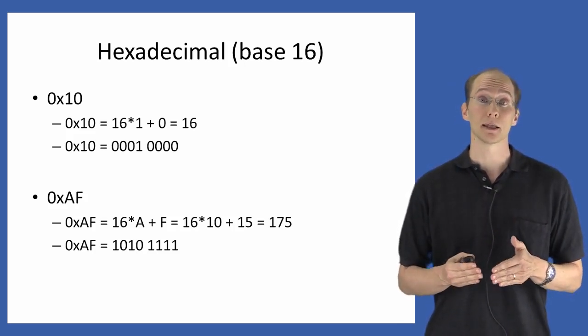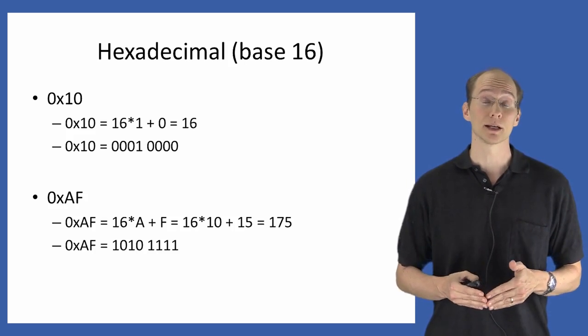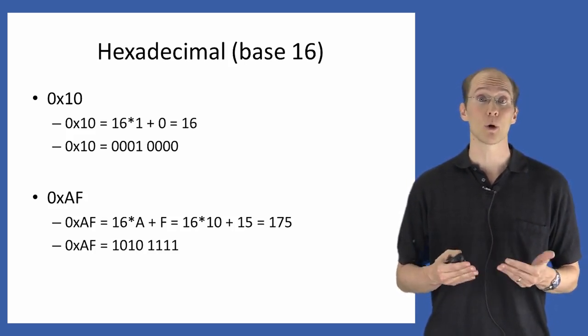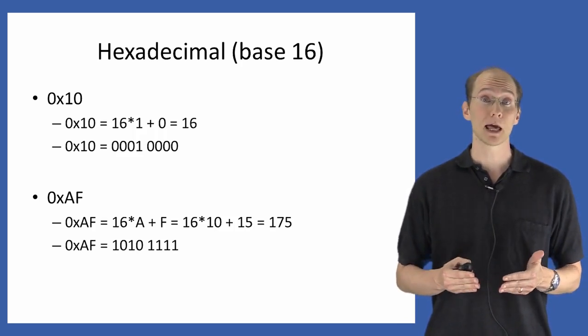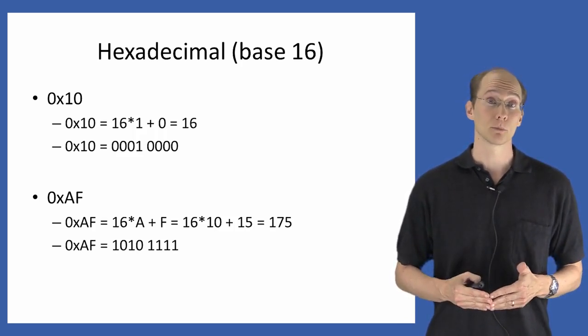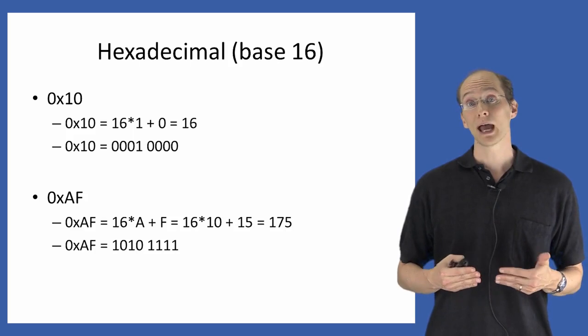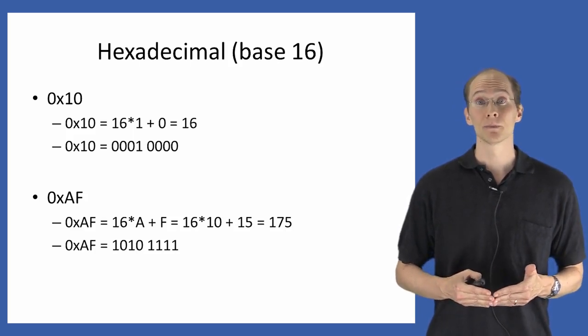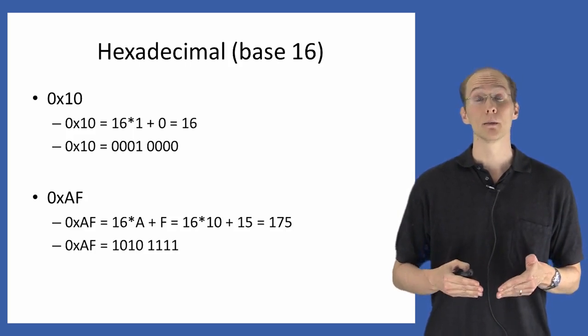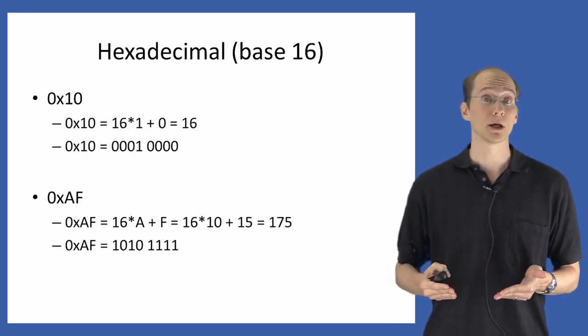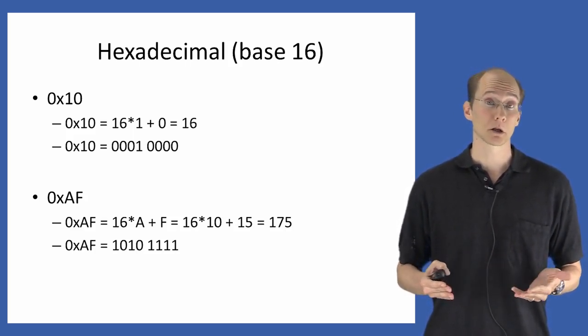where each position has value 10 times the previous one, and in binary each position has value twice the previous one, in hexadecimal notation, each position has value 16 times the previous one. So the hex number 10 has value equal to 16 times 1 plus 0 times 1, which in this case just reduces to 0.